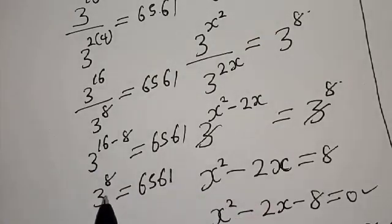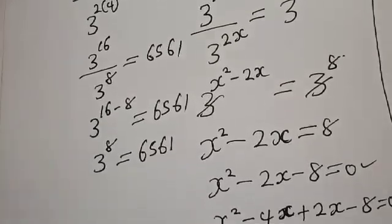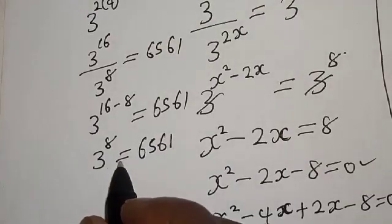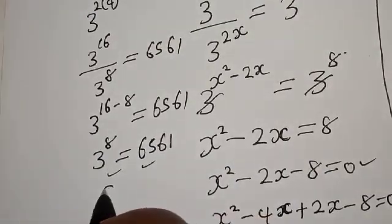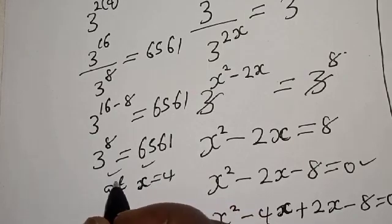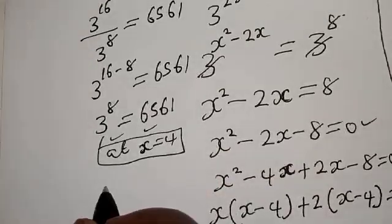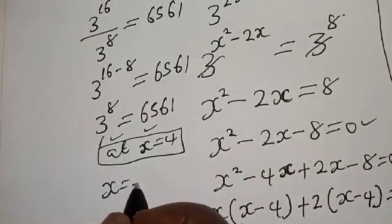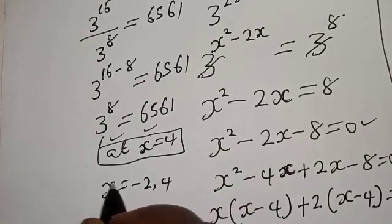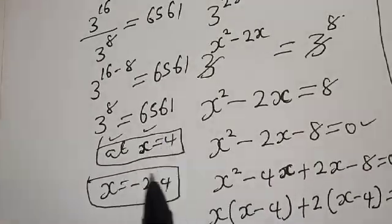3 to the power 8 equals 6561, meaning the left-hand side equals the right-hand side, which also satisfies the given equation at s equal to 4. So our final answers are s equal to minus 2 and s equal to 4. If you have enjoyed the class, please don't forget to like, share, comment and subscribe. Thank you.